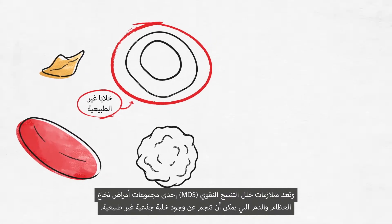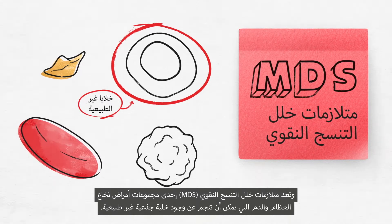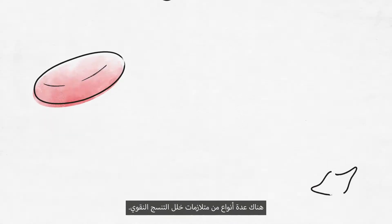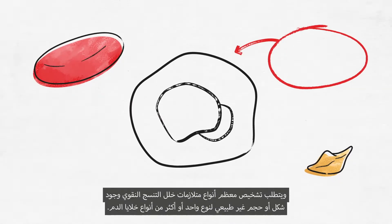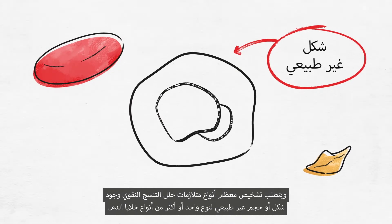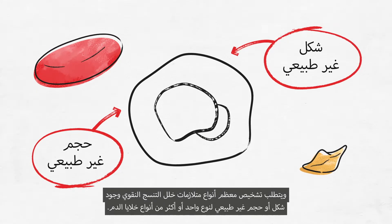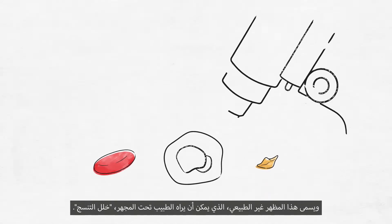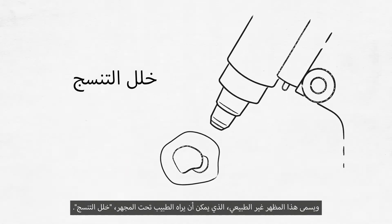One group of bone marrow and blood diseases that can result from an abnormal stem cell is the myelodysplastic syndromes, or MDS. There are several types of MDS. The diagnosis of most types requires the presence of abnormal shape or size of one or more blood cell types. This abnormal appearance, which can be seen by a doctor under a microscope, is called dysplasia.